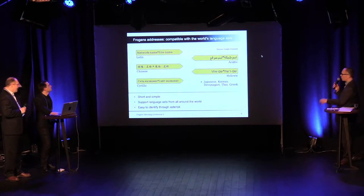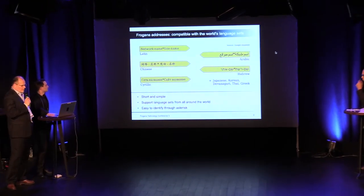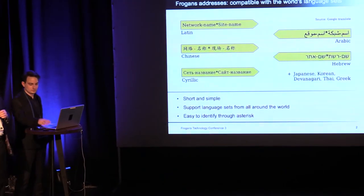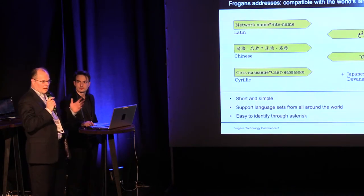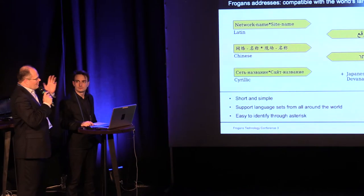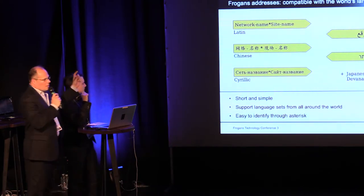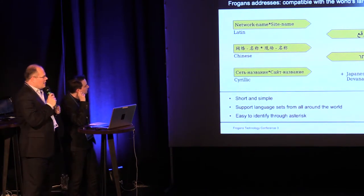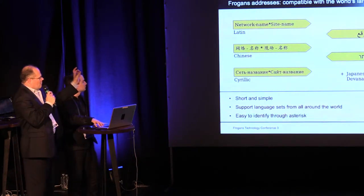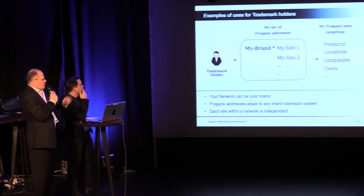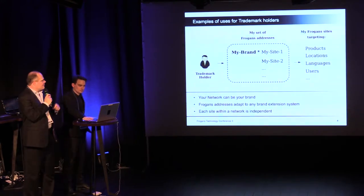On the left-hand side you have the network name, and on the right-hand side the site name. For those familiar with domain name structure, you could say the network name is the primary level and the site name is the secondary level. If you are a trademark holder, you file the name of your brand as a network name, and then create as many sites as you wish — your brand name, then star sign, then site one, two, three, four, et cetera. In marketing terms, it's like brand extensions.